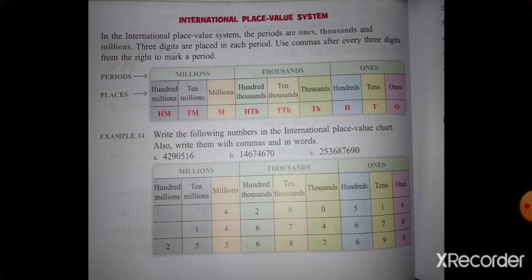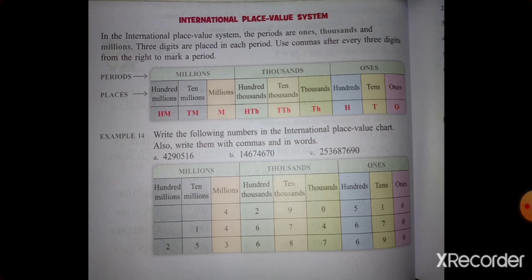3 digits are placed in each period. In the Ones period there are 3 separate places where we mention the number. Similarly, in the Thousands period there are again 3 places. And in the Millions period there are also 3 separate parts where we can write a digit. So 3 digits are placed in each period.